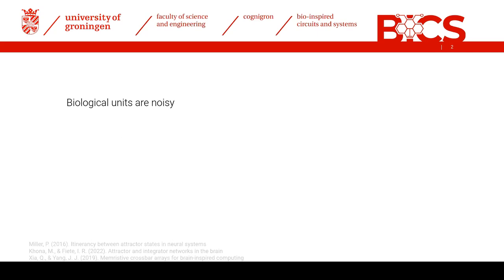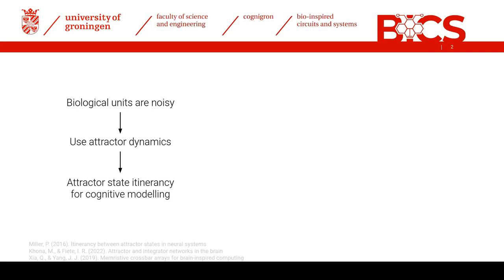We start with the assertion that biological units are very noisy — neurons are noisy, synapses are noisy. Yet despite being composed of very unreliable noisy units, the brain still seems to function robustly. One architecture that can circumvent this noisiness and achieve robust computational performance is attractor networks, where neural dynamics can be simplified to descending on some energy landscape. Many cognitive processes can be modeled as an itinerary between attractor states. But my claim is that we don't have any easy, inexpensive way yet to give a Hopfield attractor network these state transition functionalities.